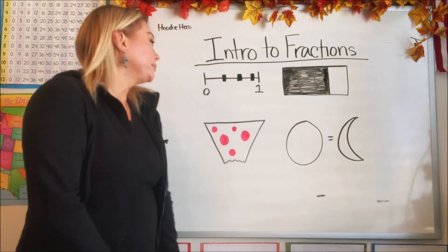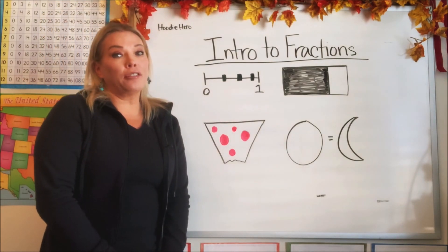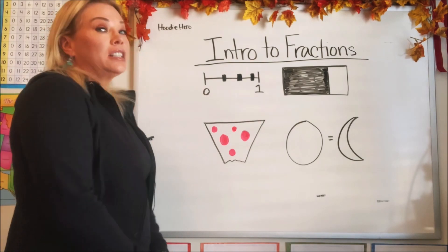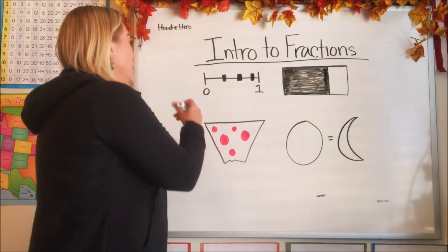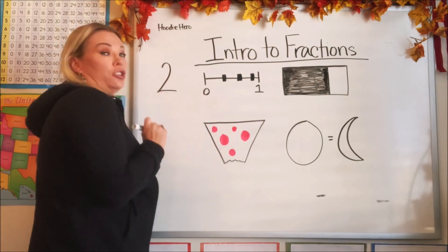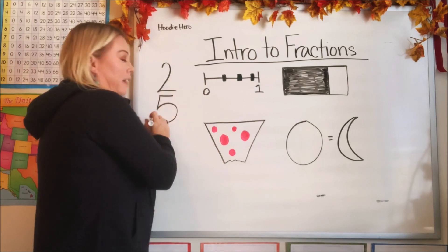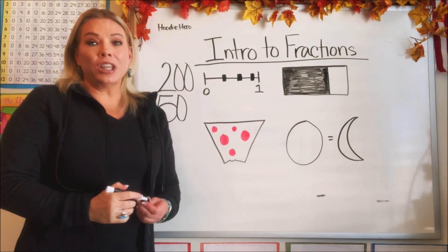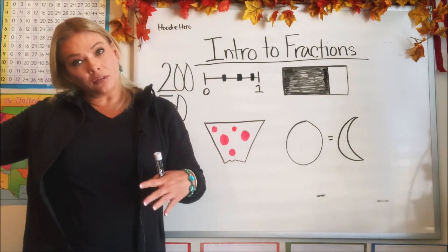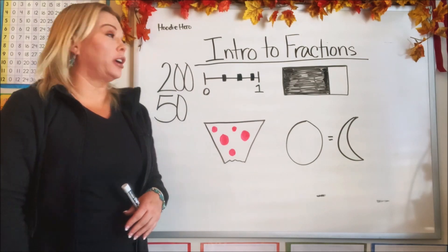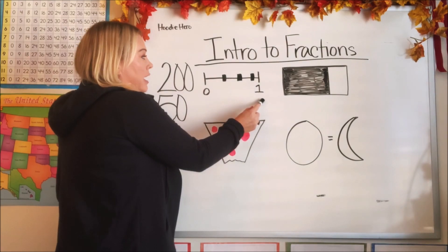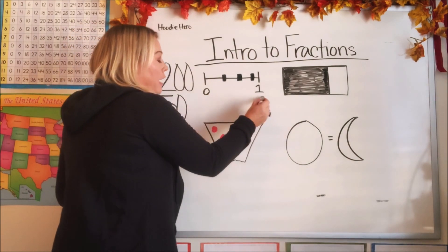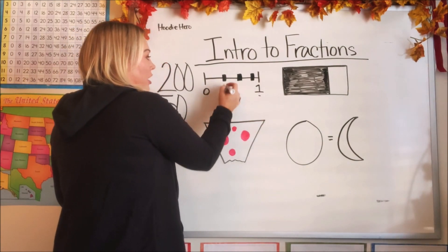Okay, let's get started. To understand what a fraction is, I wrote some examples up here on the board. A fraction is not quite a whole number. A whole number would be any solid number like two, or five, or 50, or 200 — any number starting with one all the way up to infinity is a whole number. Now, between zero and one is where fractions lie.